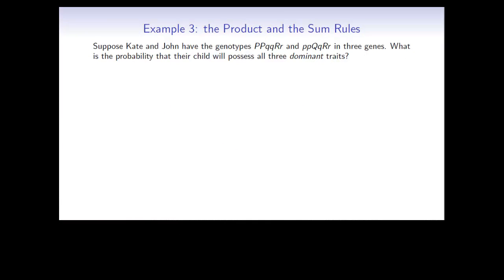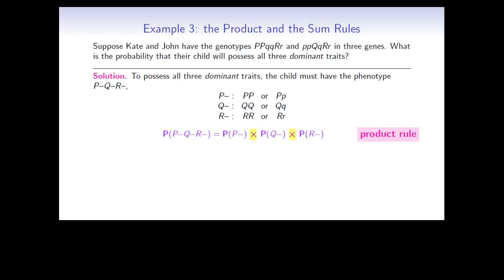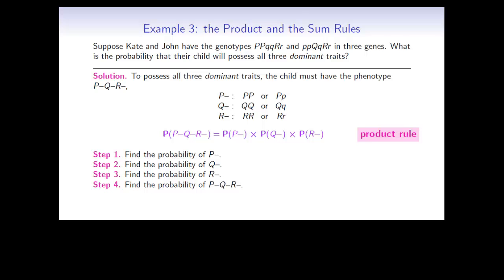Now let's have a look at a longer example that involves both the product and the sum rules. Suppose that Kate and John have given genotypes in three genes, where a capital letter represents a dominant allele and a lowercase letter represents a recessive allele. What is the probability that their child will possess all three dominant traits? To have all three dominant traits, their child must have a phenotype that involves at least one dominant allele in each of the three genes. Each gene is independent of the others, so we can use the product rule — we need to multiply three independent probabilities together. To solve this, we find each of these three independent probabilities and, as a final step, multiply them together.